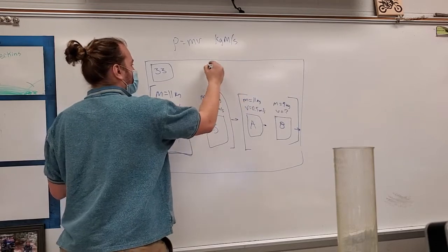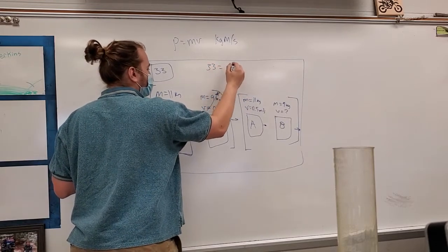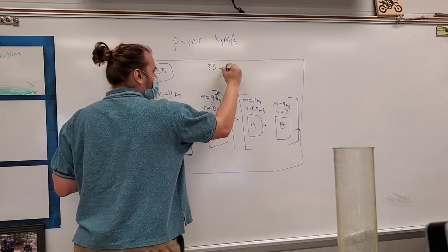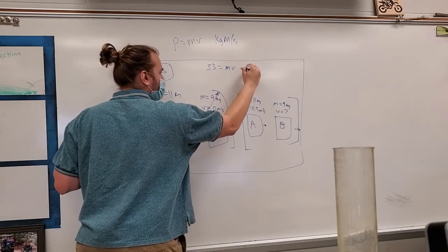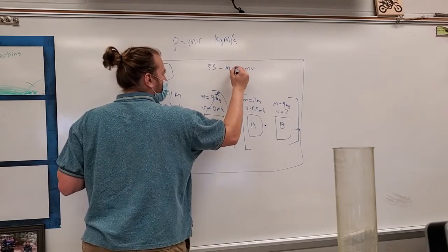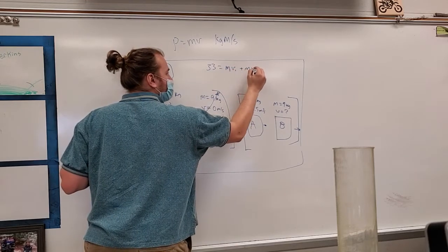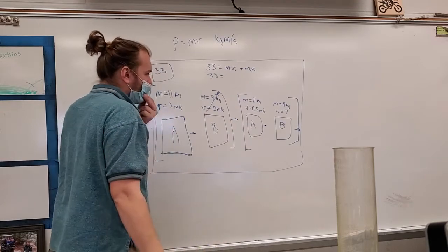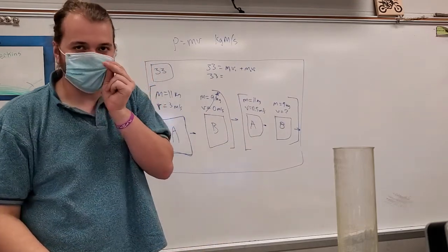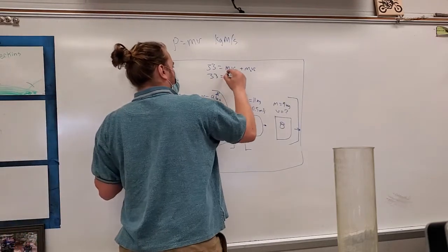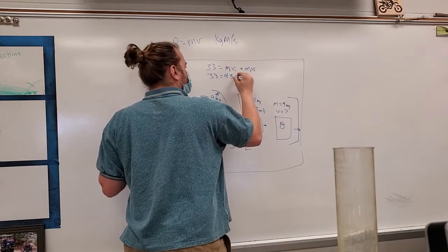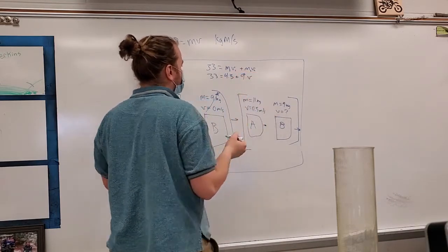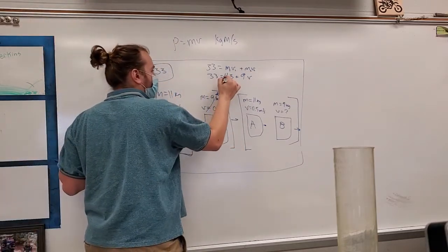So we have two things going on here. We say, okay, 33 is equal to, remember what I said before, MV plus MV. We'll call this 1, 1, 2, 2. 33 is equal to, let's multiply these two together. So 11 times 0.5 is equal to 4.5 plus 9 times velocity. So let's subtract 4.5.